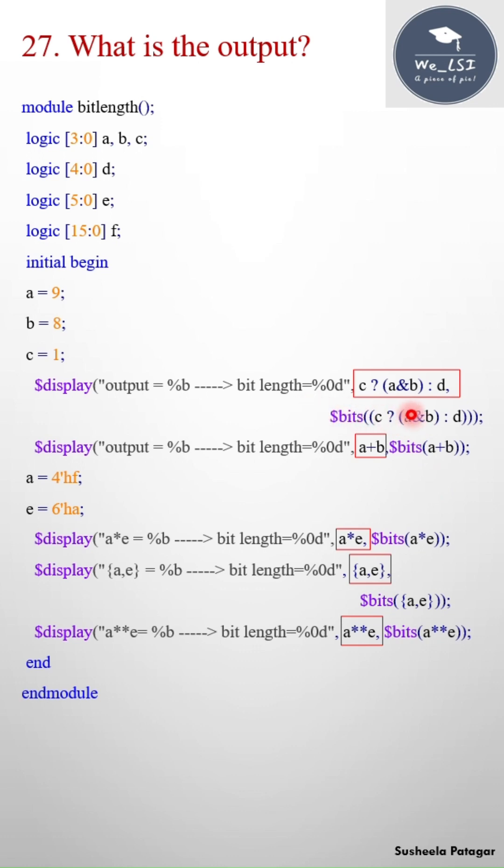If you see this example it may look very simple, but when you are telling the output you have to take care of the bit length of the output. The bit length of the output will be dependent on whether the expression is self-determined or context-determined.